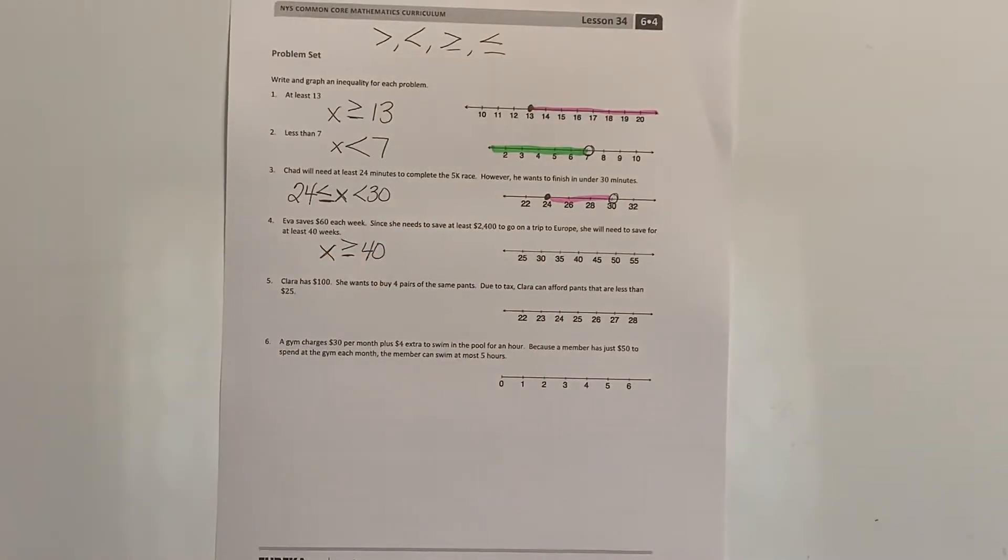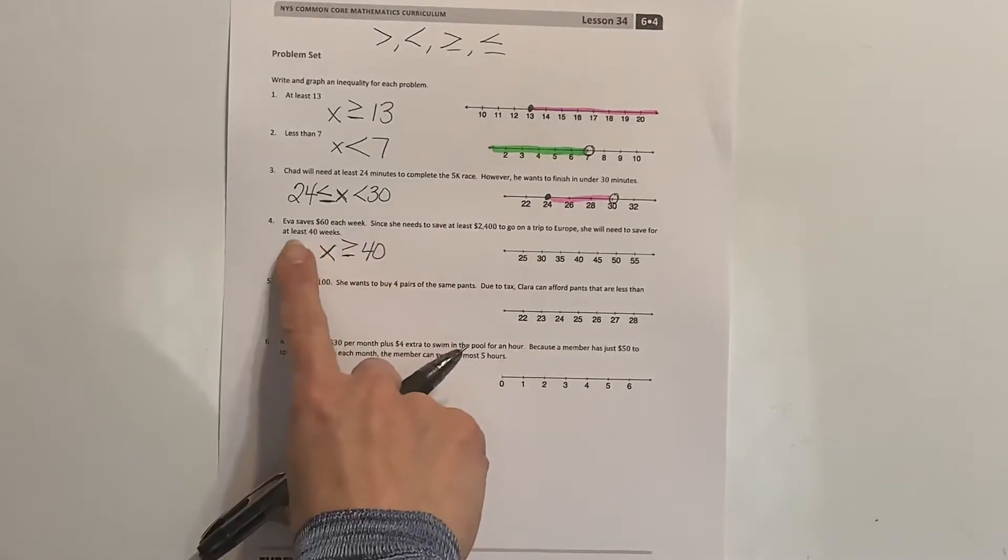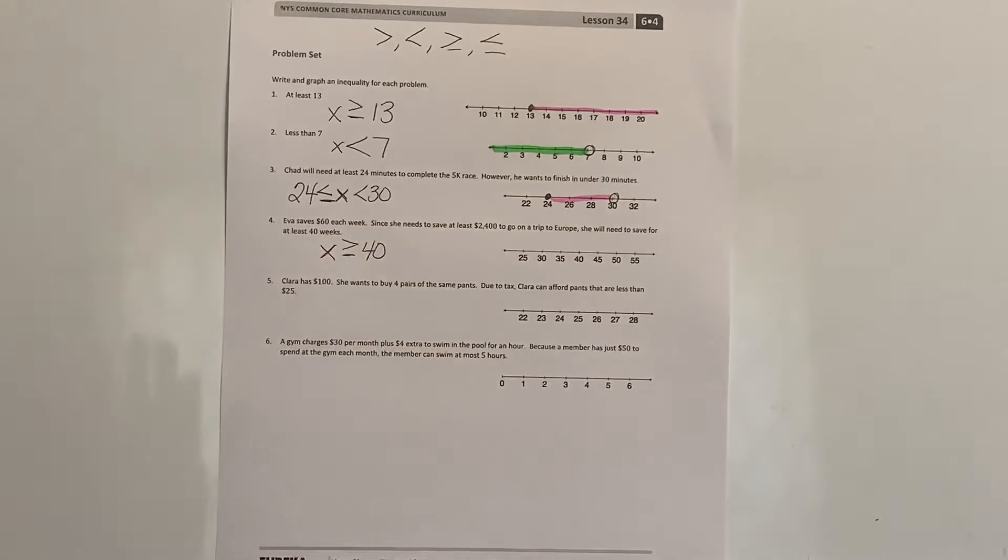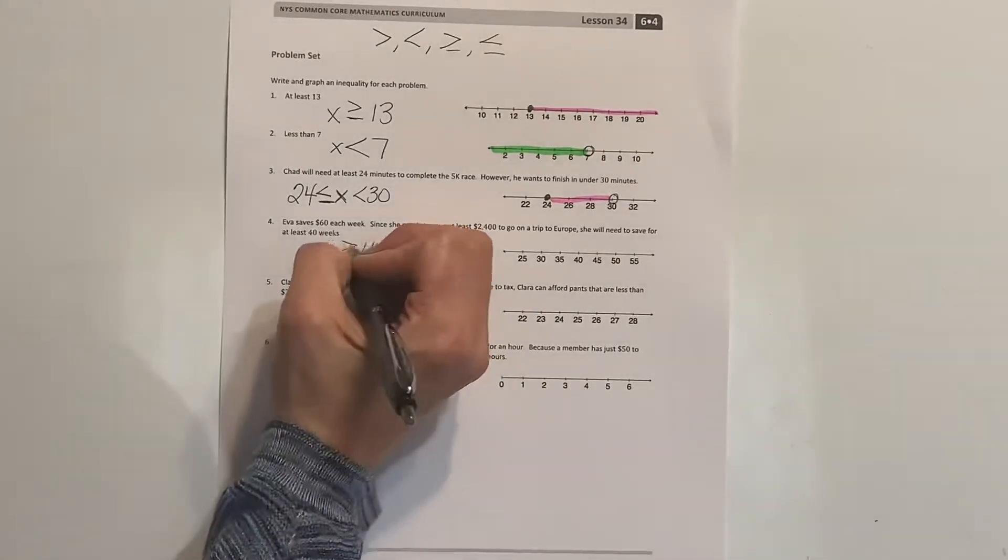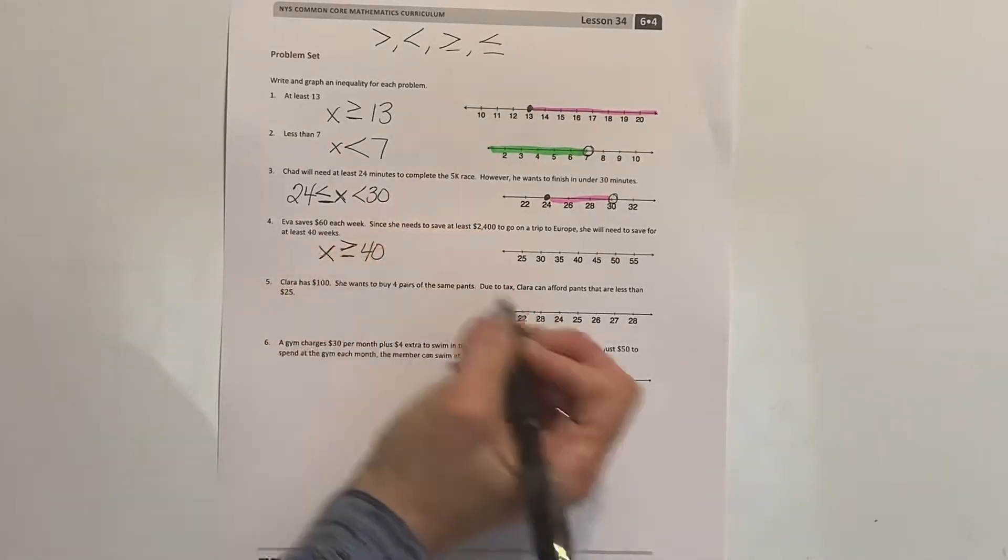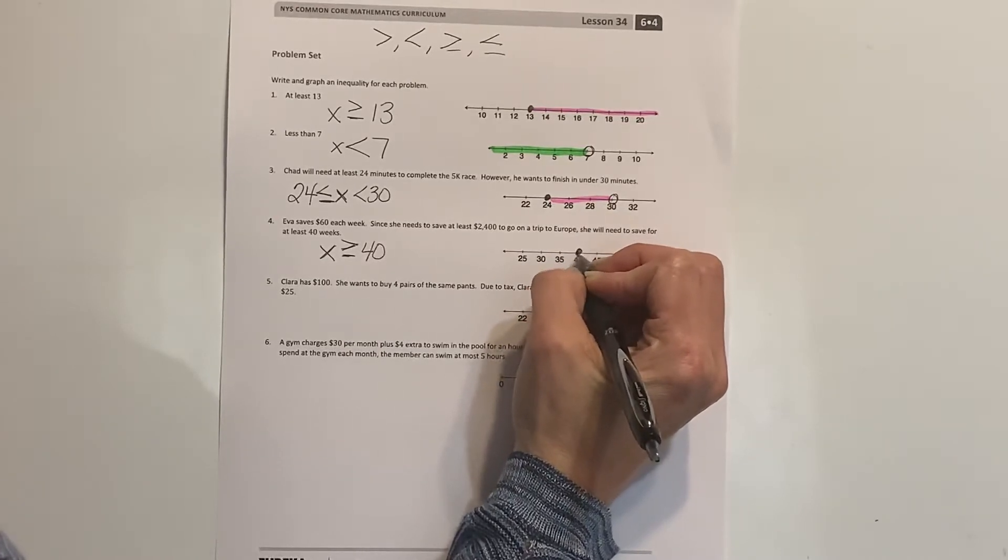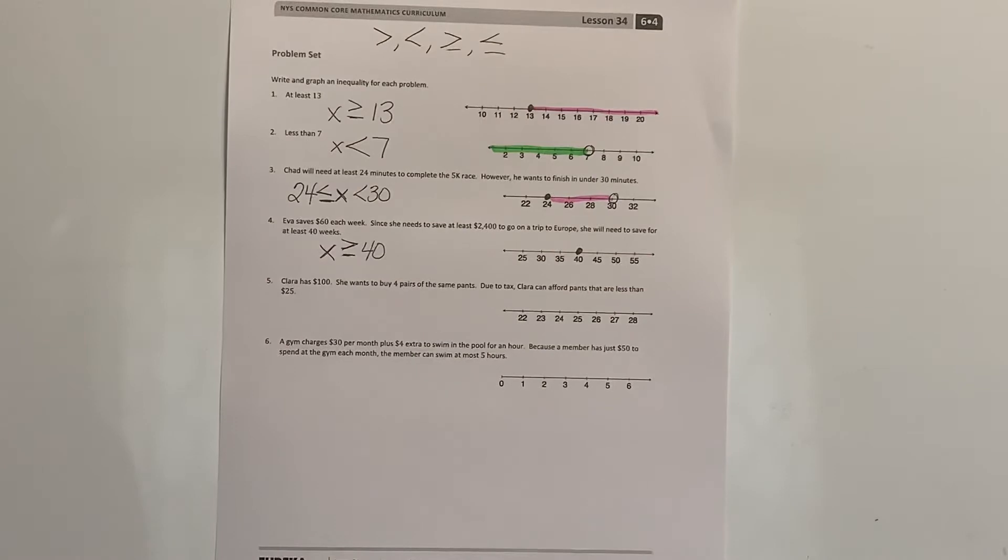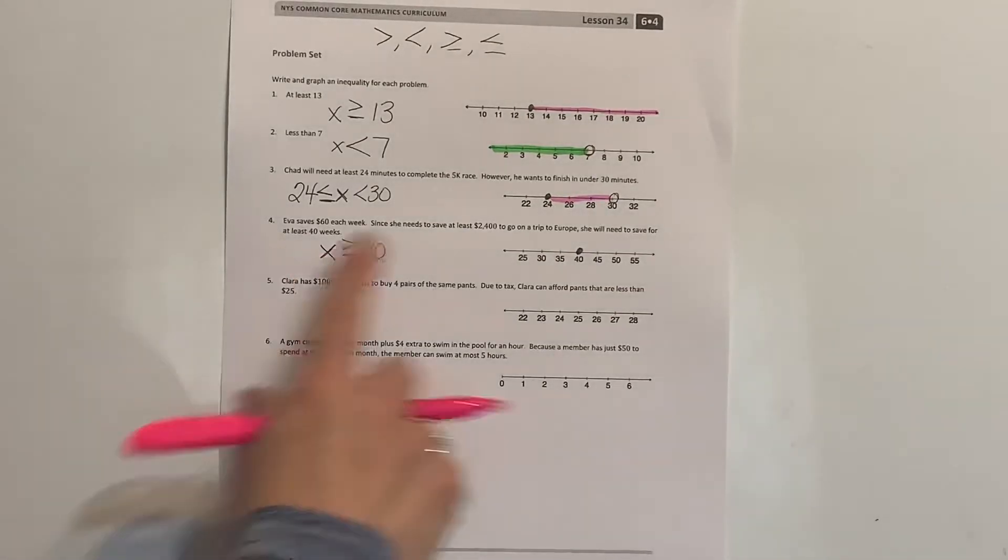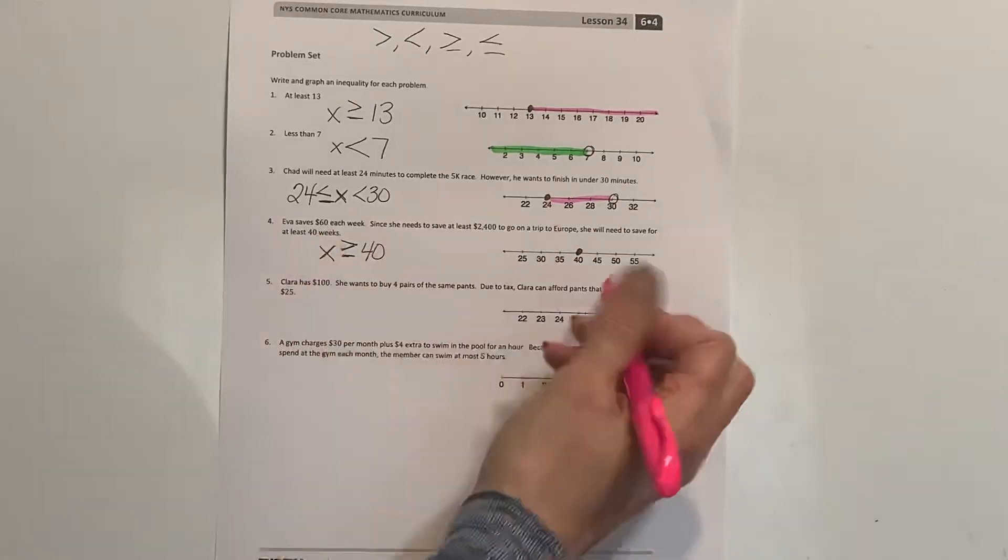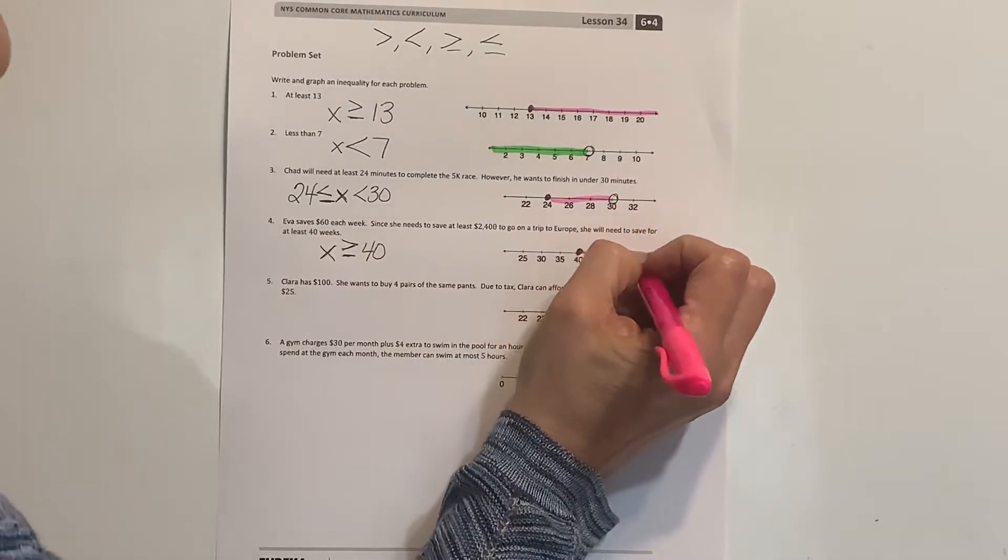Greater than or equal to. Greater than means it can be more, and it says at least 40 weeks. So can it be more than 40 weeks? Yes. Can it include the 40 weeks? Well, it says at least 40 weeks, so that's why we wrote the greater than or equal to. Yes, it can include 40 weeks, so that's going to be a solid circle. Can she save for more than 40 weeks? Yes, at least 40 weeks, so she could save for longer than 40 weeks.